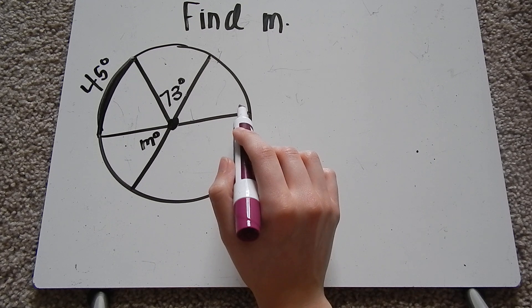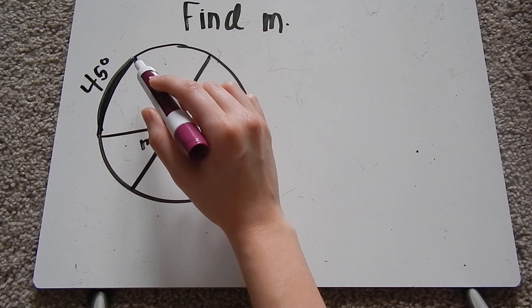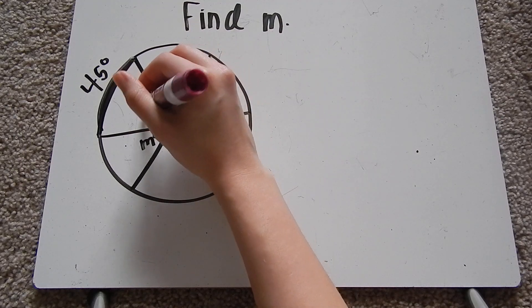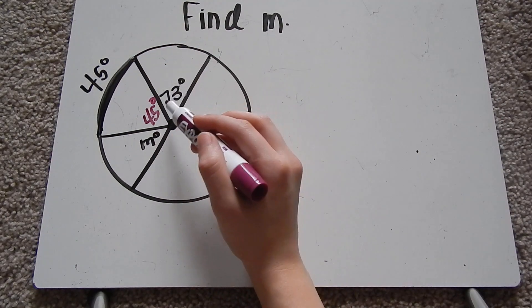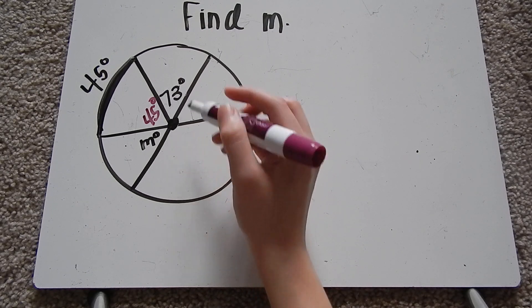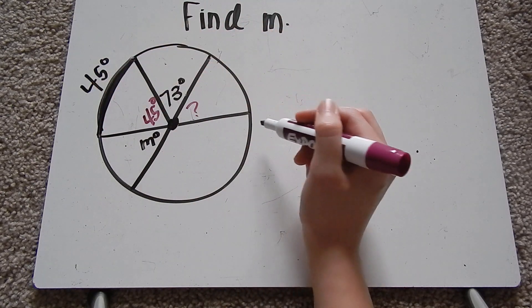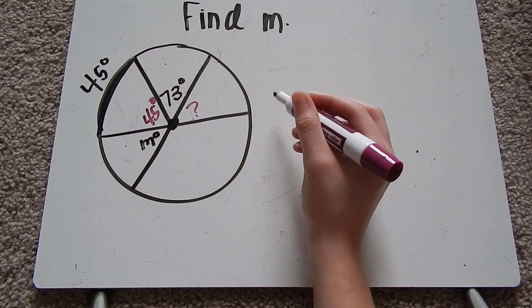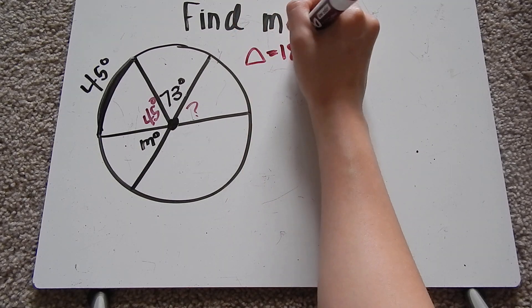I know that the arc here is 45, which means this angle measure is 45 degrees. This angle measure is 73. And this angle measure here makes up half of this circle. So this is what I was talking about earlier. Half of the circle is 180 degrees.